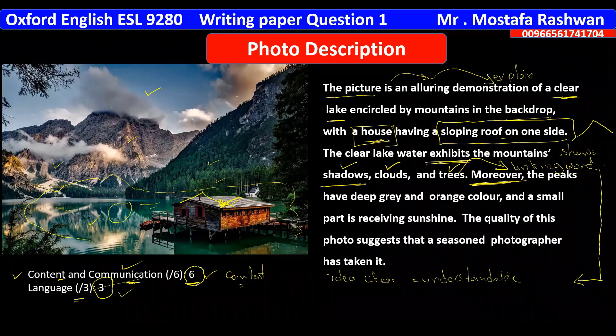The peaks — meaning the summits of the mountains — have a deep grey and orange color, which is a good description of what you can see. A small part is receiving sunshine, meaning just that one area is excluded from the fog and is sunny. The description ends with: 'The quality of the photo suggests that a seasoned photographer has taken it.' This is a general ending.